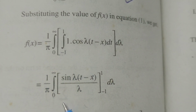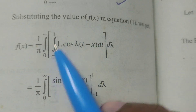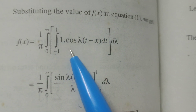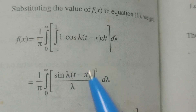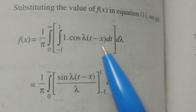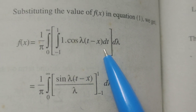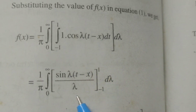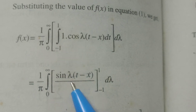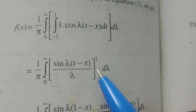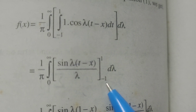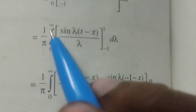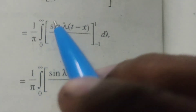Now, (1/π) · integral from 0 to ∞. Integrating cos[λ(t − x)] with respect to t gives sin[λ(t − x)] / λ. Substituting the limits −1 to 1, we get (1/π) · integral from 0 to ∞ of [sin(λ(t − x)) / λ] from t = −1 to t = 1 dλ.